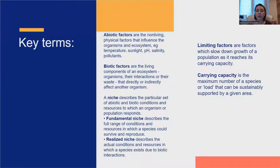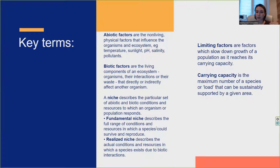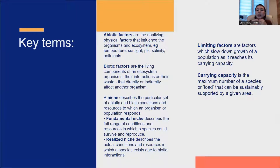A niche describes the particular set of abiotic and biotic conditions and resources to which an organism or population responds. We can say that this is the place of a certain organism in an ecosystem or community. There are two types of niche. Fundamental niche describes the full range of conditions and resources in which a species could survive and reproduce — these are the possible conditions. But every living organism lives in its realized niche. Realized niche describes the actual conditions and resources in which a species exists due to biotic interactions.